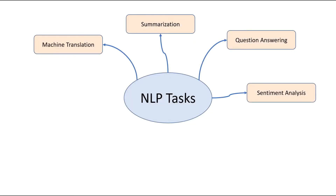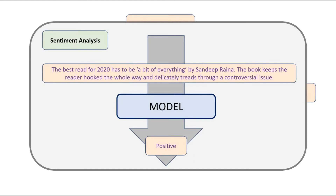Sentiment analysis is a very popular NLP task, for example in automating the categorization of movies or book reviews by customers. In this example, we have a crude classification problem where the task is to identify whether the sentence is either positive or negative. In other words, we are extracting the type of sentiment present in the sentence.